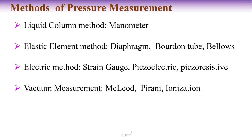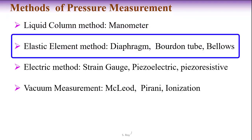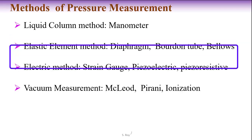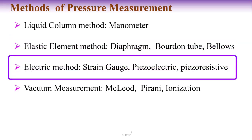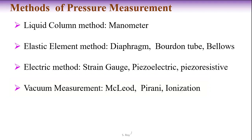What are the different methods of pressure measurement we will discuss in this series? There are liquid column methods, normally termed as manometers. There are elastic element methods, which include diaphragm, Bourdon tube, and bellows. There are electrical methods like strain gauge, piezoelectric, and piezoresistive. There are different methods to measure vacuum, which include McLeod, Pirani, and ionization gauges. All these types of pressure measuring systems will be discussed one by one.